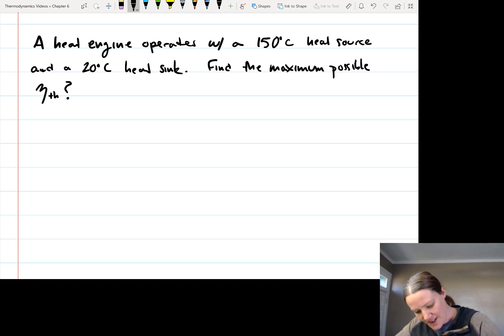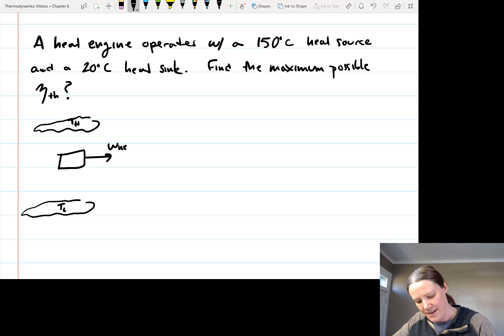So what we have here is our heat source and heat sink, so this is T high, T low, we have our heat engine, we're going to get some network out, and our heat transfer, so this is Q high and Q low.